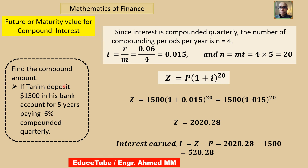For the second problem, it is compounded quarterly, so M equals 4. Then i equals 0.06 divided by 4 equals 0.015, and N equals M times T equals 4 times 5 equals 20. Putting i equals 0.015 and N equals 20 into the formula with a calculator, we find Z, and interest equals Z minus P equals 520.28.